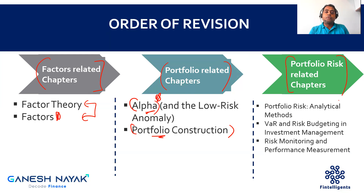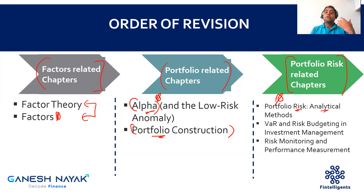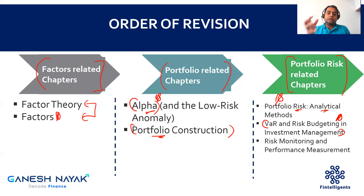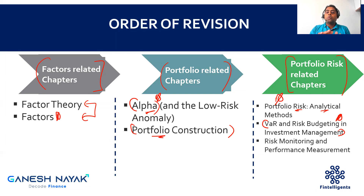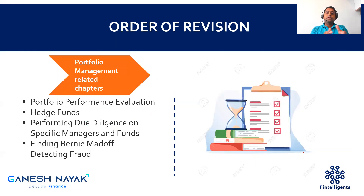The third bucket covers portfolio risk-related parts. There is a chapter on portfolio risk analytics — a very very important chapter for your exam performance. Then VAR and risk budgeting: you can expect calculation-driven questions from these two chapters, and they may connect to credit risk or market risk concepts in the exam. There is also a chapter on risk monitoring and performance, which is not as important — only one or two concepts are slightly relevant.